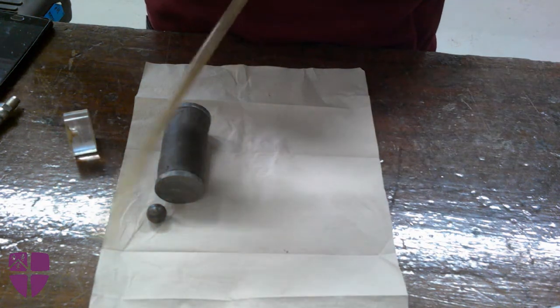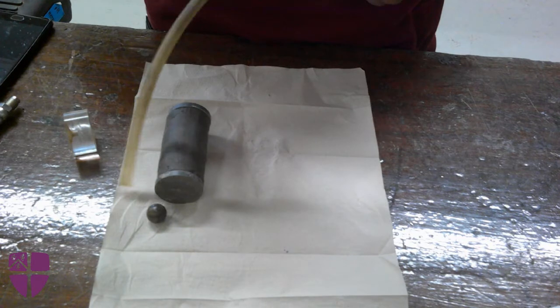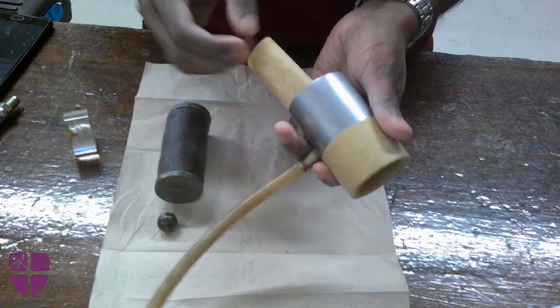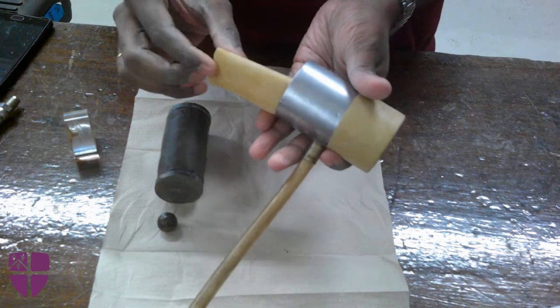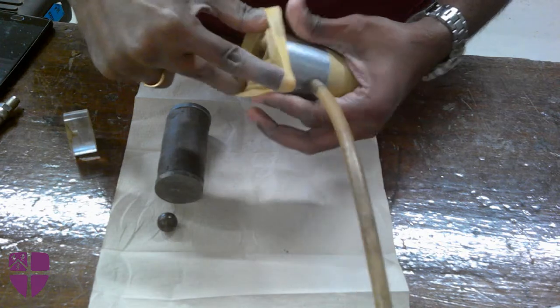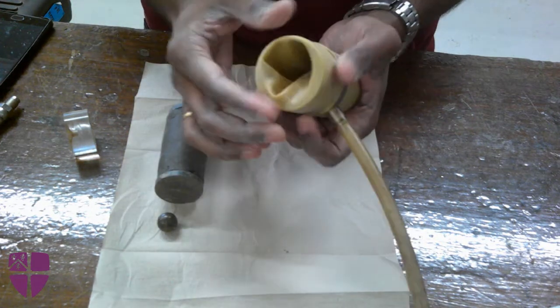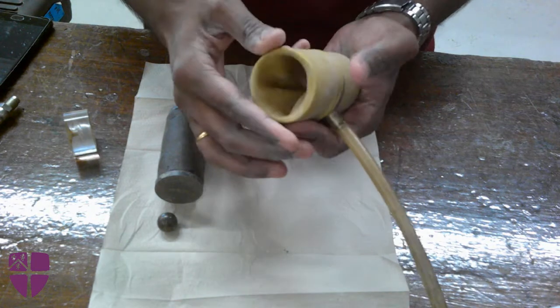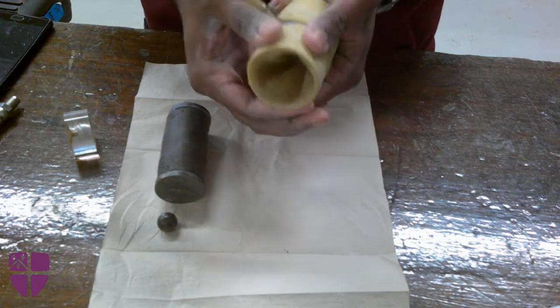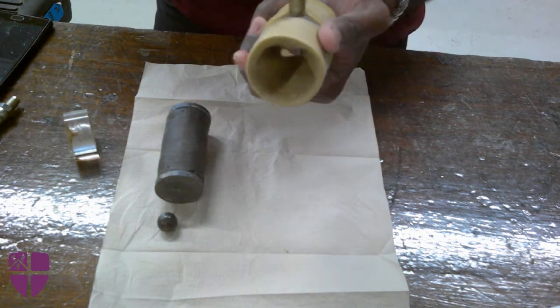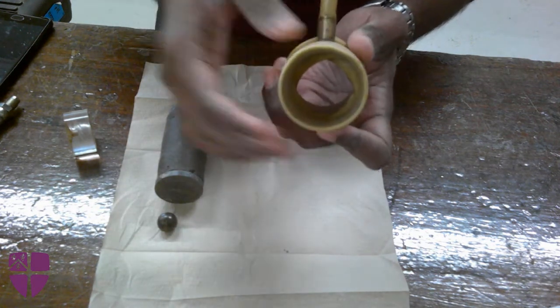You can use the pipe to create suction such that the sample can be easily placed inside the hollow tube.